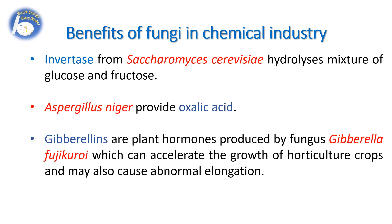Invertase enzyme obtained from Saccharomyces cerevisiae hydrolyzes a mixture of glucose and fructose. Aspergillus niger provides oxalic acid. Gibberellins are plant hormones produced by the fungus Gibberella fujikuroi, which can accelerate the growth of horticultural crops and may also cause abnormal elongation.